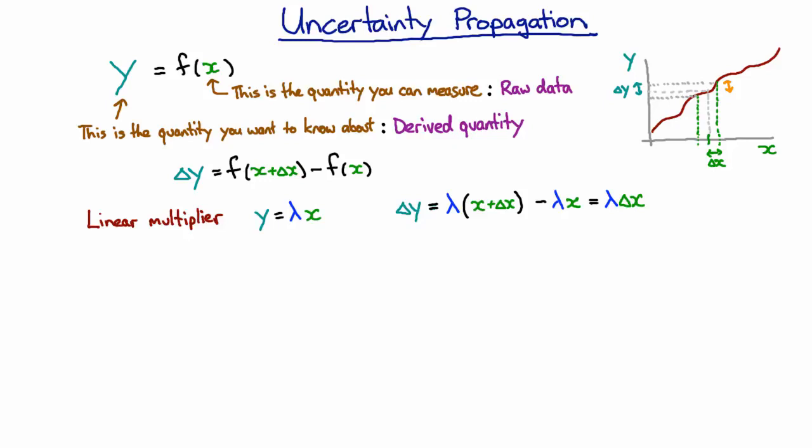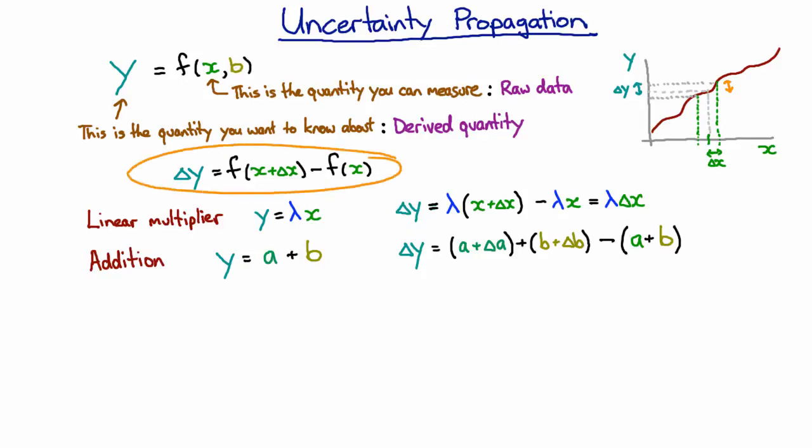It's very common that we're actually making more than one measurement, and so a very common one would be something like addition. So there you might have two quantities that you're measuring, and you're just adding them together. Now we've allowed our derived quantity to depend on more than one variable, and that means that when we're estimating our uncertainty, we would have both this variable going to an extreme value and that value going to an extreme value.